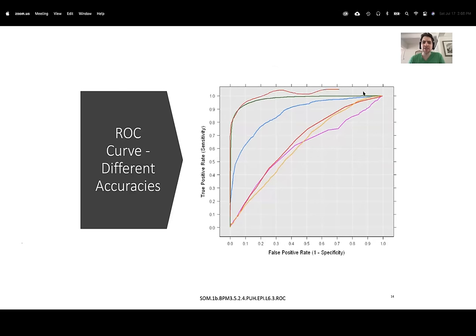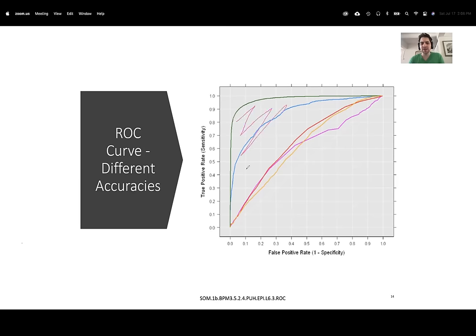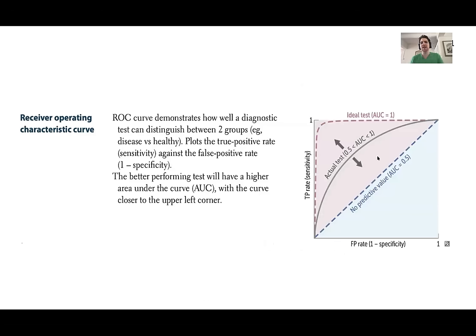For the ROC curve: the only thing you really need to know is that the closer the curve is to the upper-left axis — the more of a right angle it makes — the better the test, because you have a greater area under the curve. The greater area under the curve, the more accurate the test is. They'll probably put A, B, C and ask which one's the best test. And that's what it says here — this is what defines it.